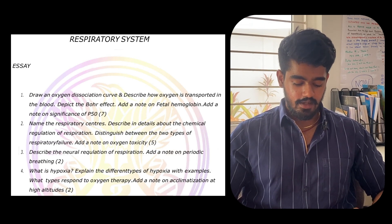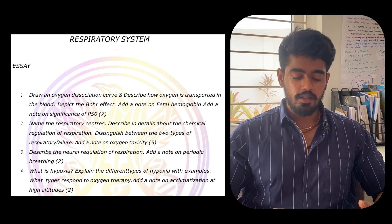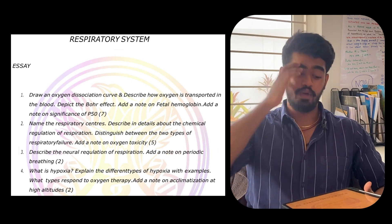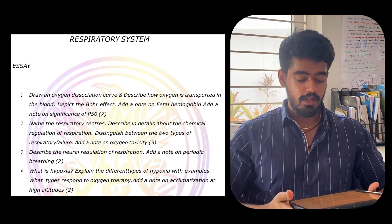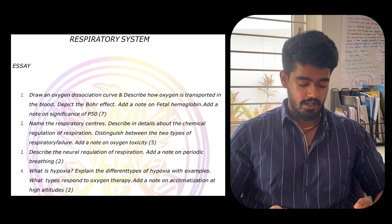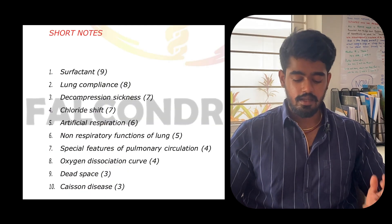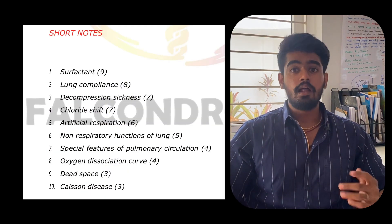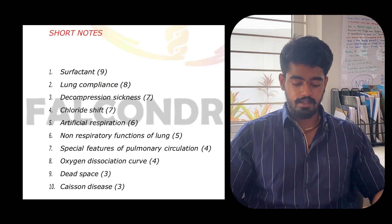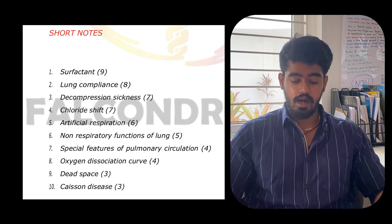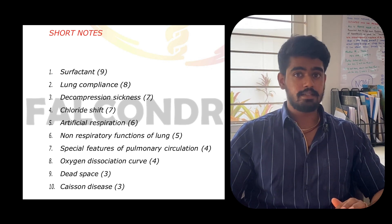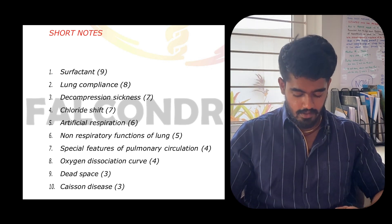For the respiratory system, the important topics are: oxygen dissociation curve — very very important — respiratory center, and respiration and hypoxia. Short notes include: surfactant, lung compliance, decompression sickness, chloride shift, artificial respiration, dead space, and Caisson's disease — very important.